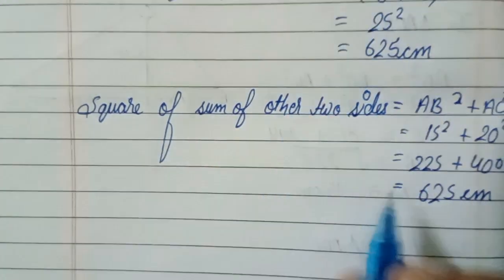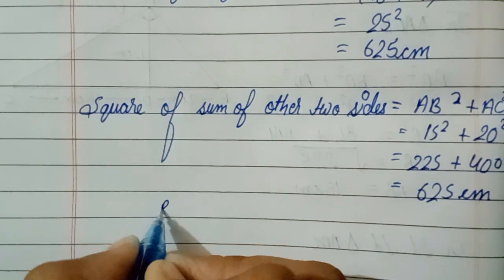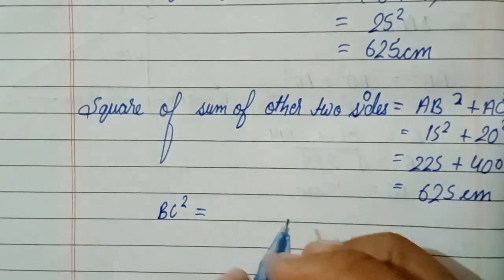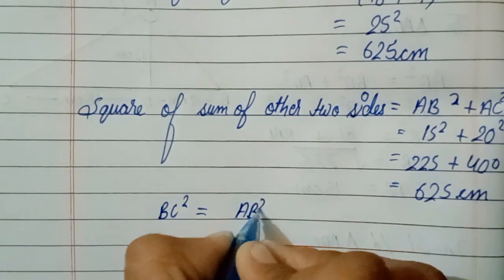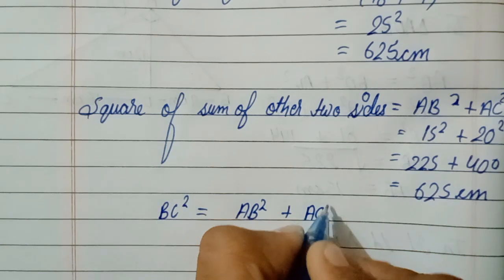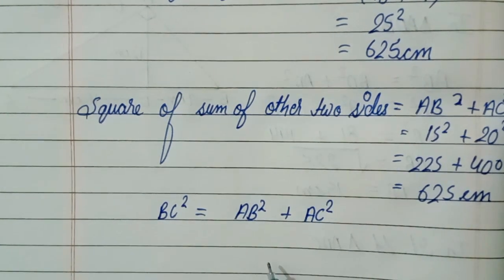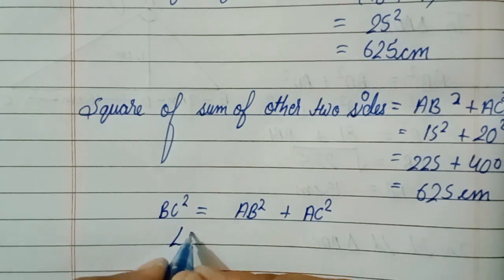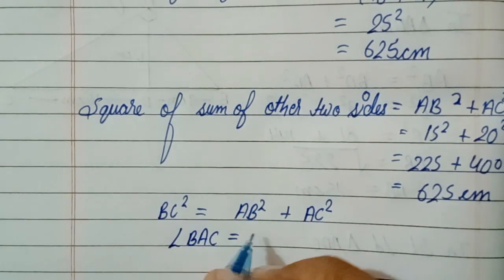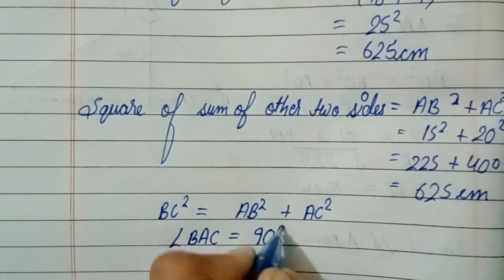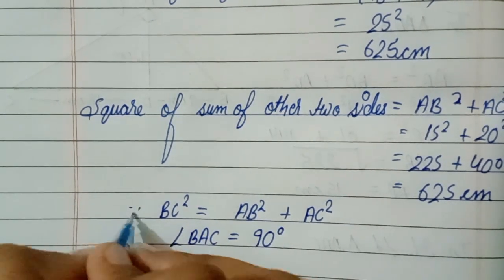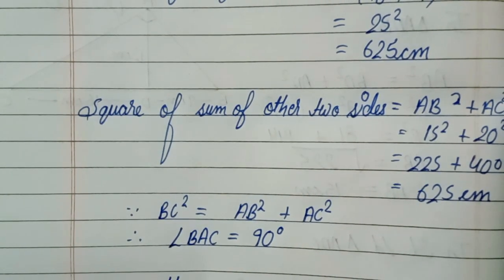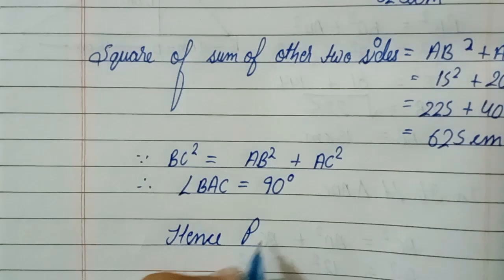Since BC square equals AB square plus AC square, this proves that angle BAC is equal to 90 degrees by Pythagoras theorem. Hence proved.